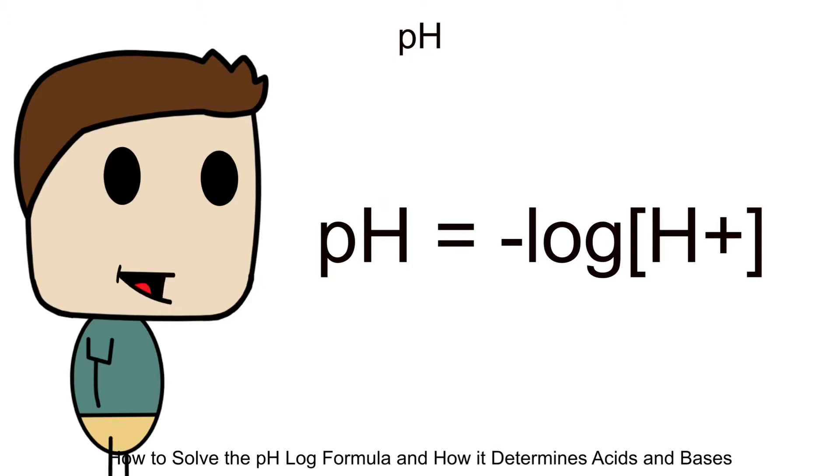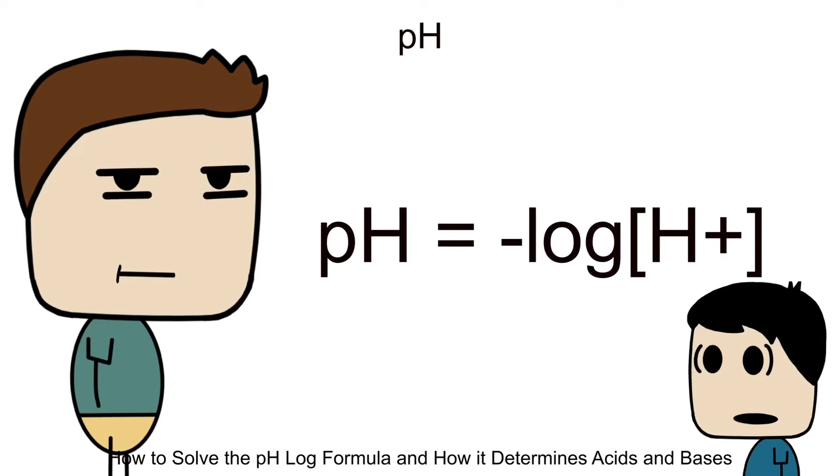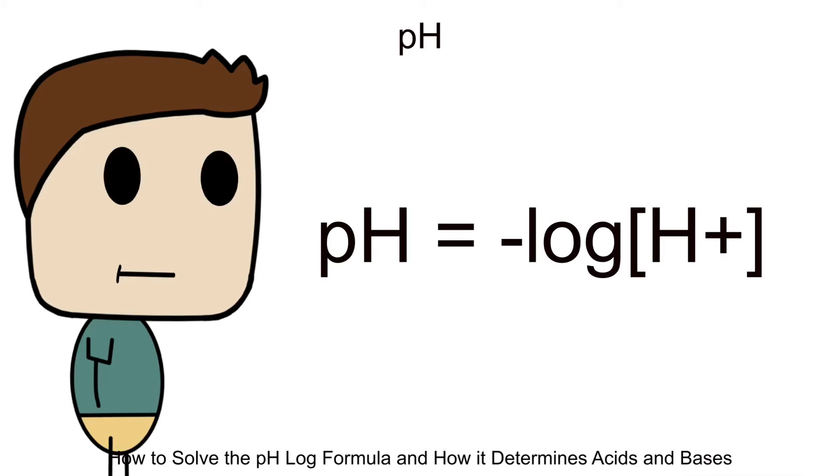Check out the formula here. This is the main formula everyone uses to calculate between H plus concentration and pH levels. It says that pH is equal to the negative of the base 10 logarithm of H plus ions. What's going on? Am I supposed to just memorize this? And the answer is yes, yes you should.